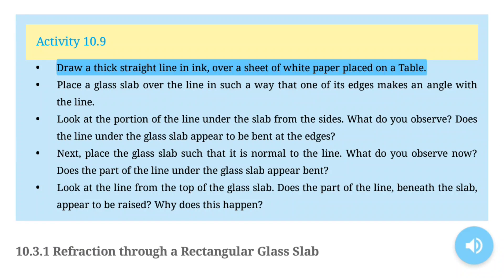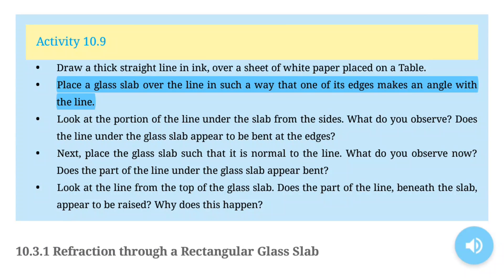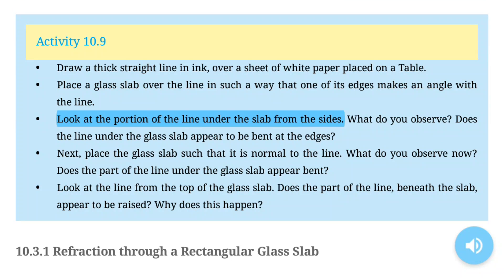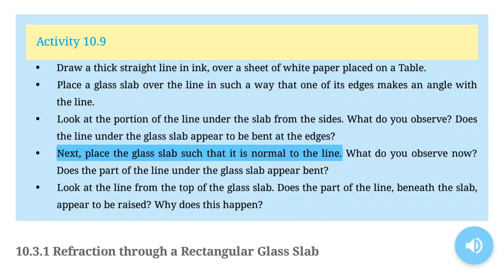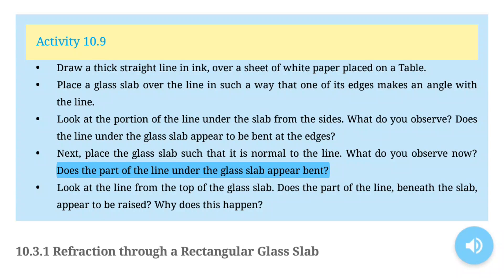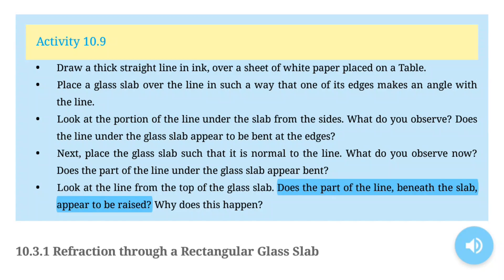Activity 10.9: Draw a thick straight line in ink over a sheet of white paper placed on a table. Place a glass slab over the line in such a way that one of its edges makes an angle with the line. Look at the portion of the line under the slab from the sides. Does the line under the glass slab appear to be bent at the edges? Next, place the glass slab such that it is normal to the line. Does the part of the line under the glass slab appear bent? Look at the line from the top — does the part beneath the slab appear to be raised?